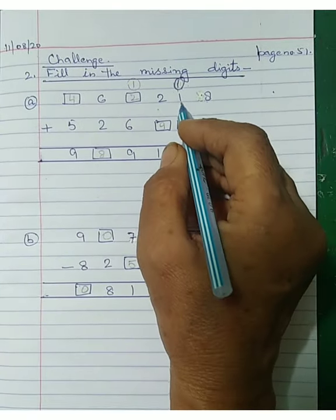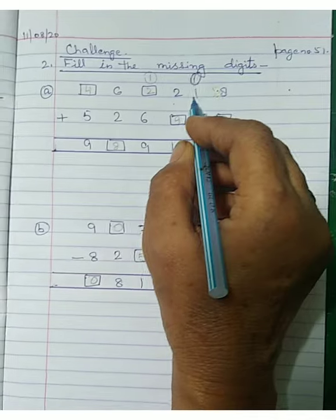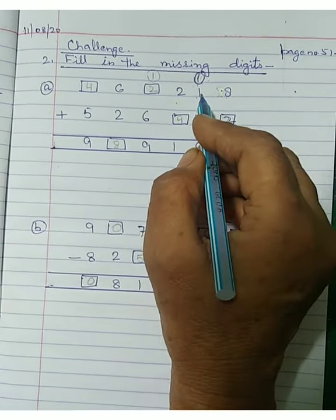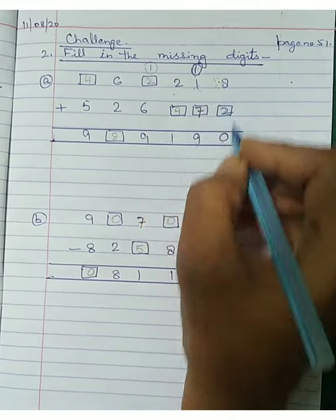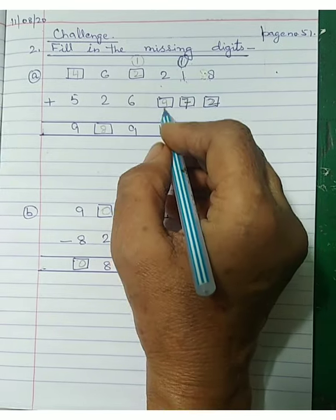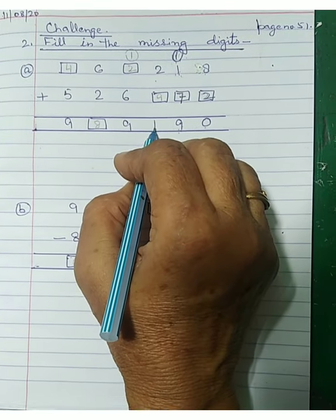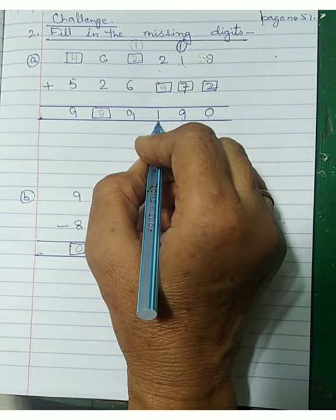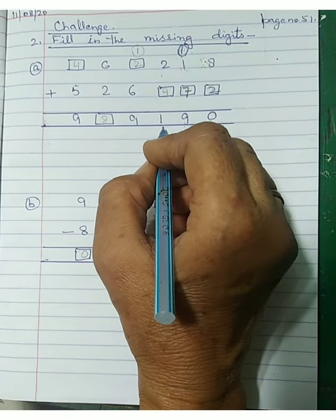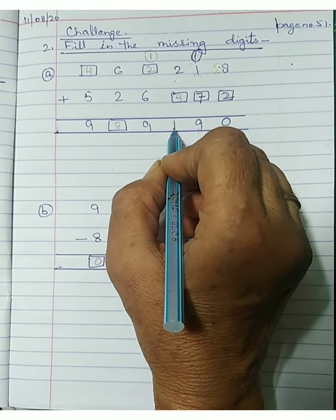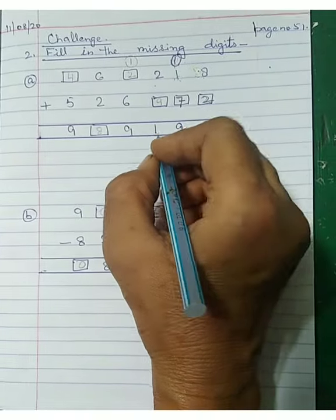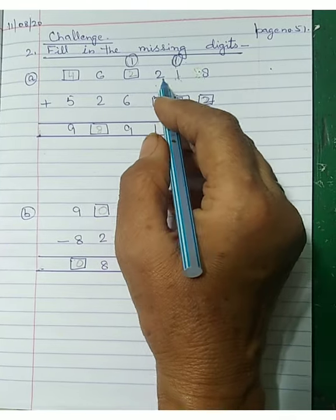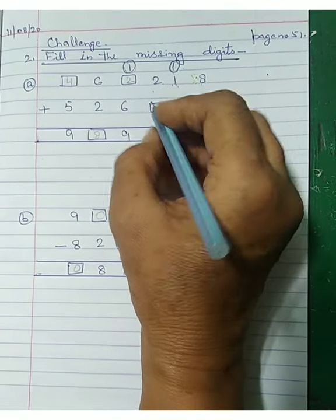उन numbers को हमने add कर लिया — 1 plus 1, 2 हो गया। अब 9 में से हम 2 minus करेंगे तो यहां पर हमारा आया 7। अब answer में जो 1 है, it means वो ones का number है। हमारे इस 2 से छोटा number है, तो वो छोटा आ नहीं सकता, तो उसमें एक और add करेंगे — carry over में कर देंगे। यह number हमारा बन गया 11।